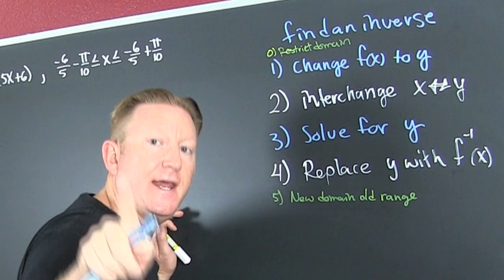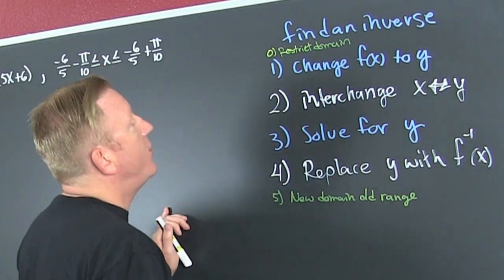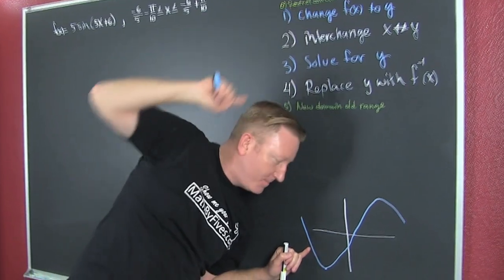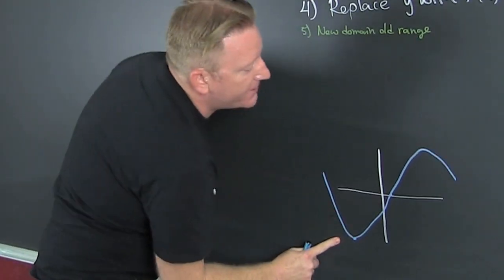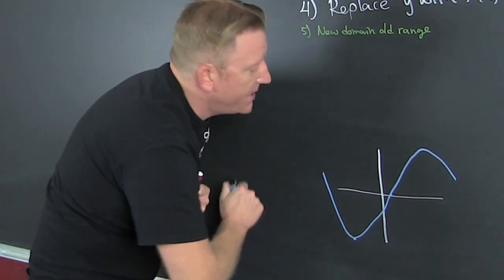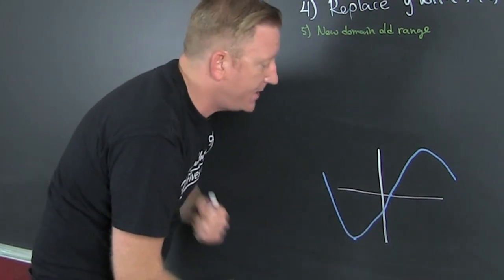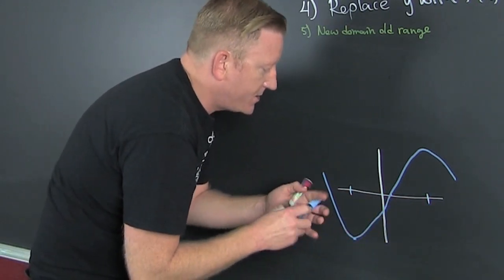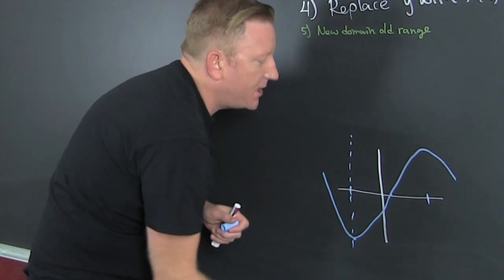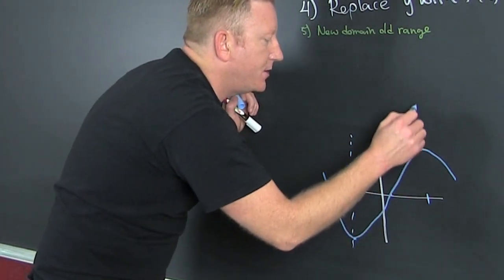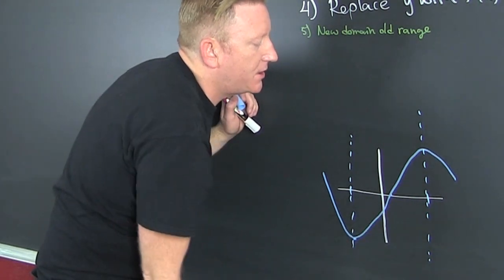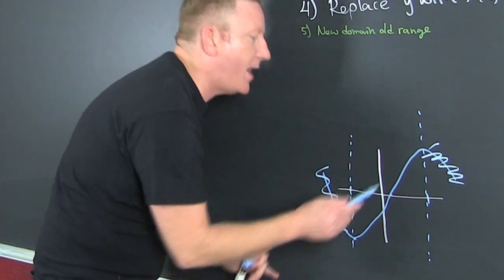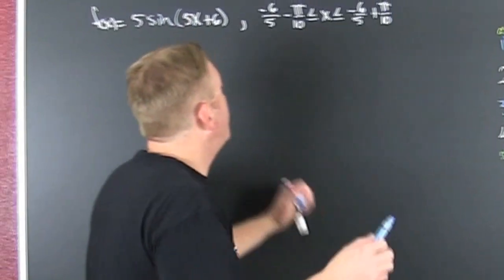Now, this is on a restricted domain. Because if we look — I drew our function — it's not one-to-one. It doesn't pass the horizontal line test. So they put a restriction on it, and then they get rid of those pieces so that it's one-to-one, so that it has an inverse.